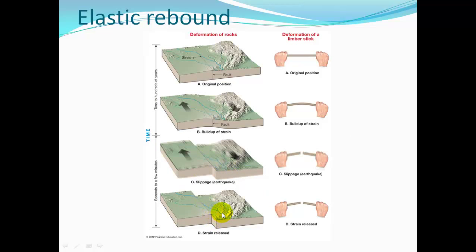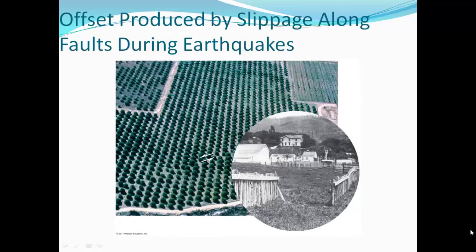A stream that used to connect across the fault is now displaced — half the stream is offset. Some changes in topography occur after an earthquake. For example, in a tree farm, once-neat rows are now offset in a zigzag pattern. A fence that was one long straight line is now offset where the fault came through, with one side pushed in the opposite direction.